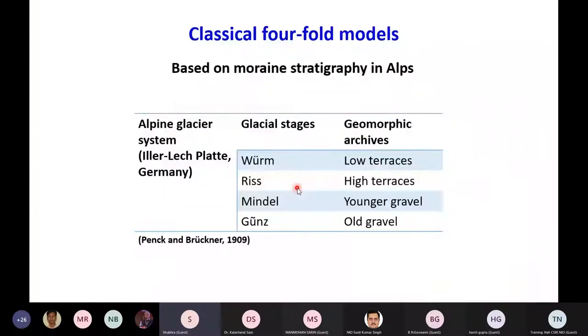And with time, classical four-fold models of glaciation started coming up. For example, for the alpine glacier systems, four glacial stages were proposed, like Wurm, Riss, Mindel, and Gunz. And similarly, for the North American glaciers, also similar kind of model was proposed.